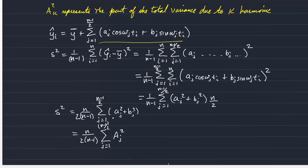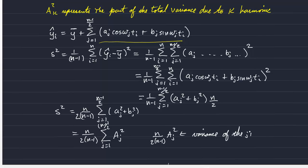It's the sum of the variances associated with each harmonic. So n over 2 n minus 1 aj squared is the variance of the jth harmonic.